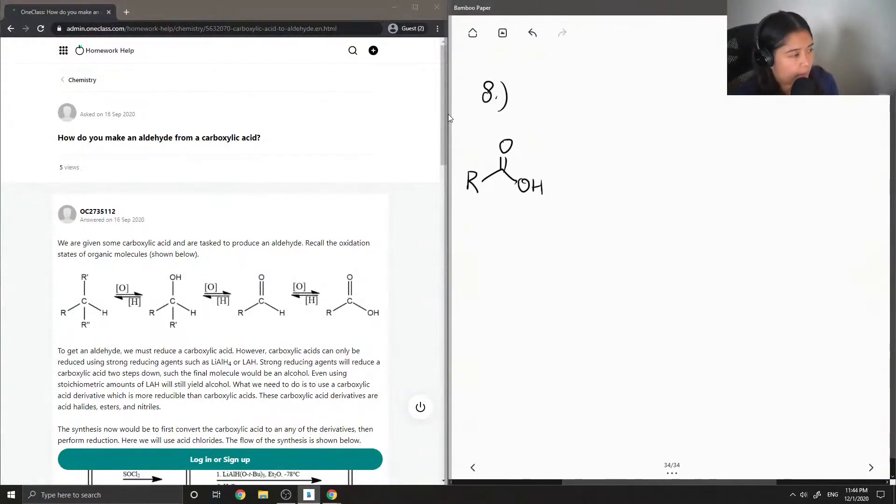The certain reagents that you might use to reduce a carboxylic acid would be lithium aluminum hydride. But however, those reducing agents are too strong, and they'll reduce your carboxylic acid straight to an alcohol.